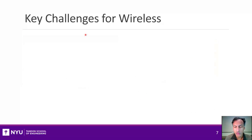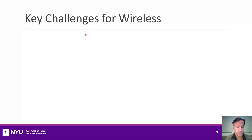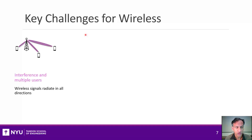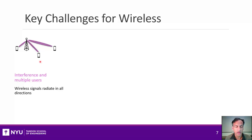The deployment of wireless services you see today represents remarkable feats of engineering, because wireless communication has a number of unique challenges relative to wired communication. The most obvious challenge is interference. When you transmit wirelessly to a receiver, the signal propagates in all directions — including directions you don't intend — and that causes interference. This becomes particularly difficult in any scenario with multiple users, such as a cellular system or people sharing a wireless access point.